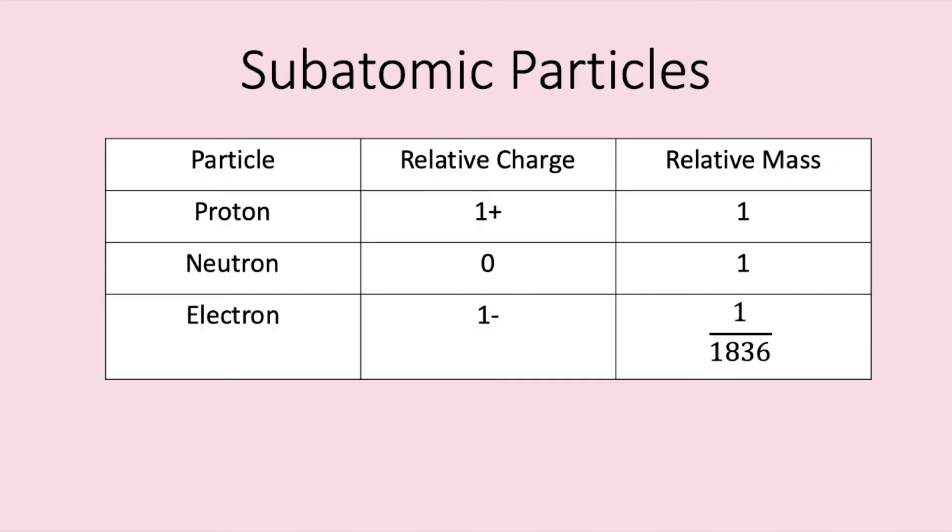Atoms and subatomic particles have tiny masses. We like to use relative masses to make it easier to understand. A proton and a neutron have the same relative mass of 1. However, an electron is much smaller and has a relative mass equivalent to 1 over 1836. You didn't need to know this number for GCSE but you will be expected to for A level.